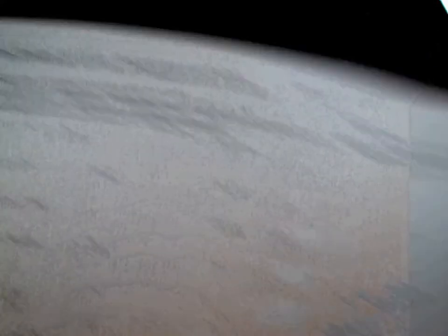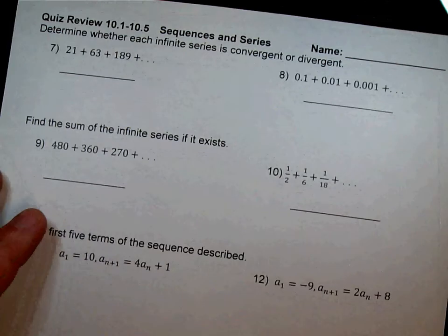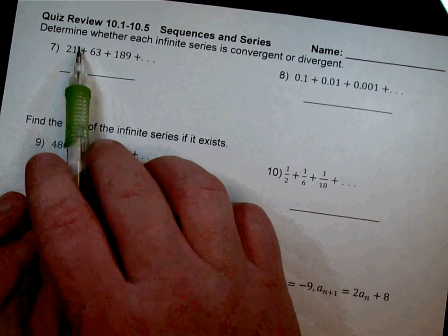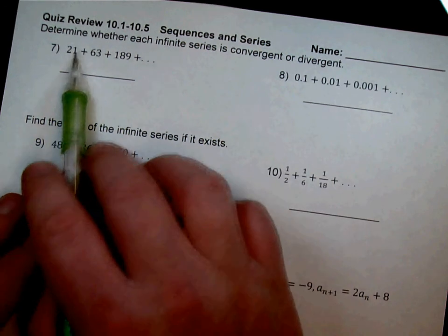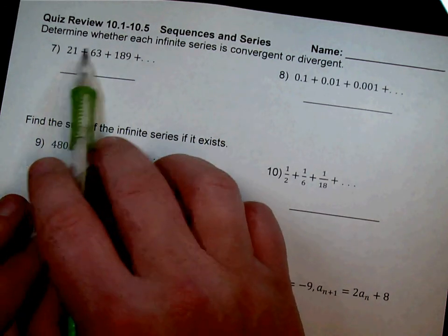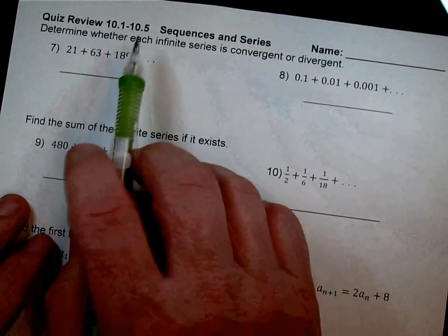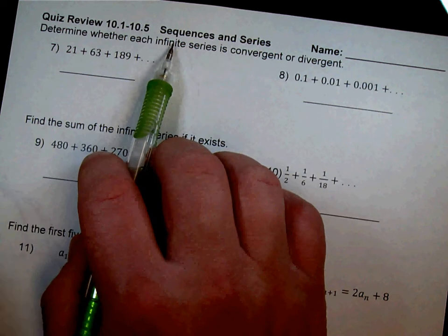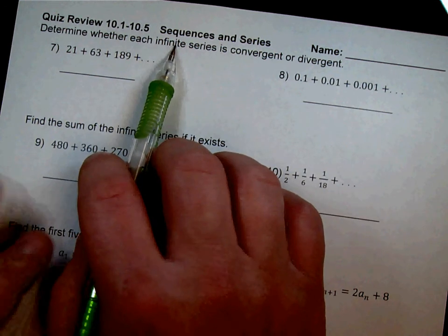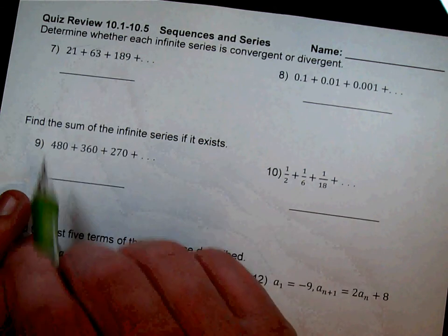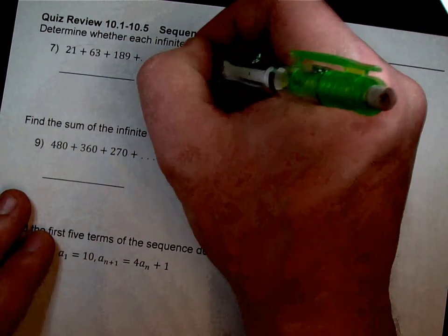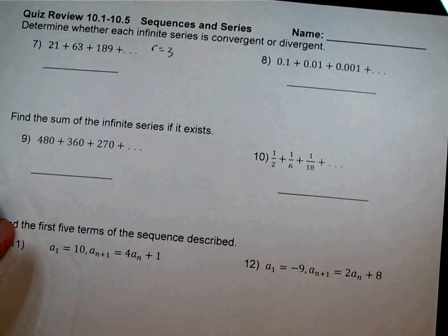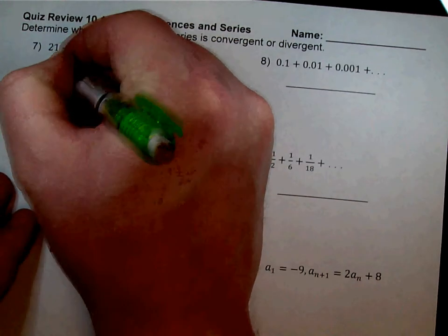Looking at the back page — determine if each infinite series is convergent or divergent. We only looked at infinite series for geometric sequences. For number 7, I can see we're multiplying by 3. You want to find that ratio — it's 3. If that R is larger than 1, it's divergent. So number 7 is divergent.